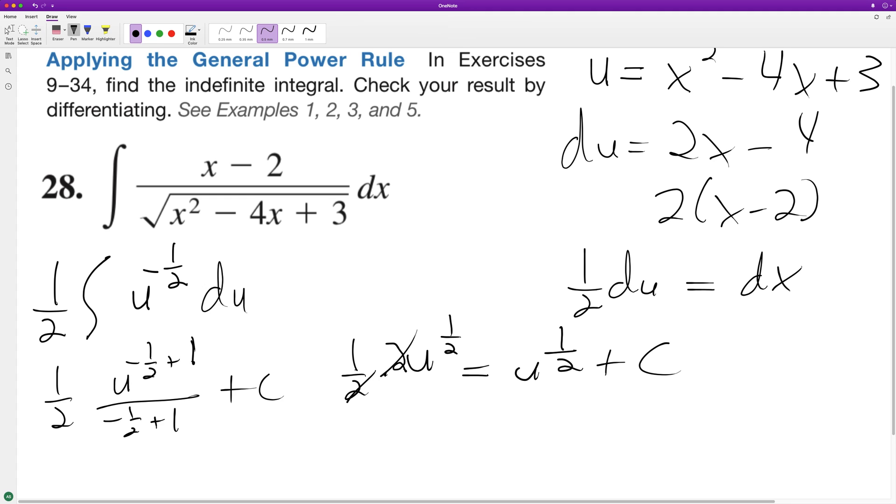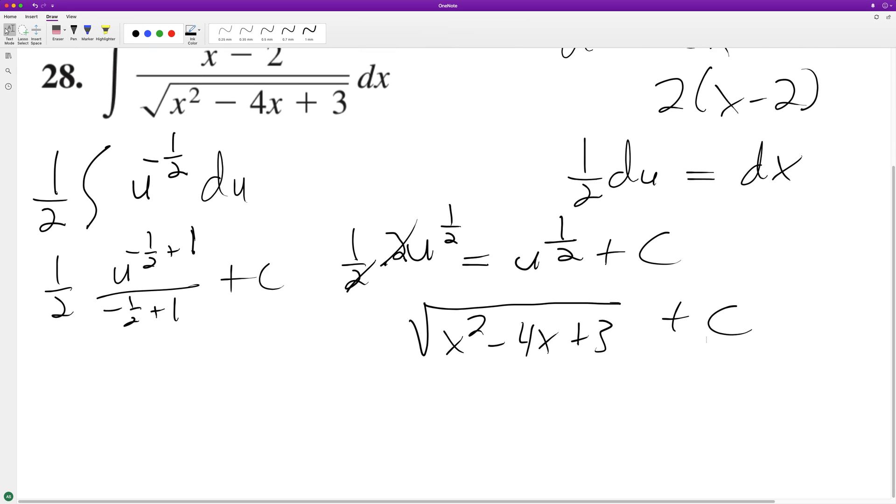Plus C. So this ends up being—the final result is equal to—this is the same thing as the square root of x squared minus 4x plus 3 plus C. And that's the final integral.